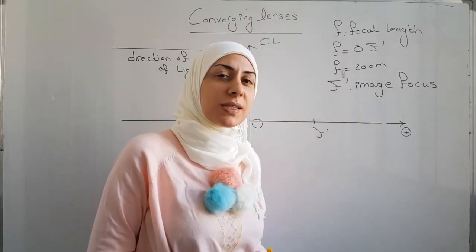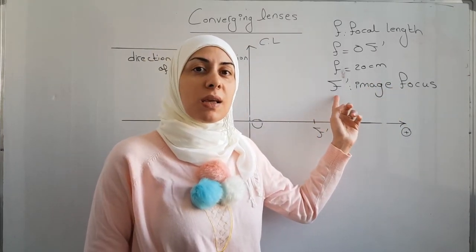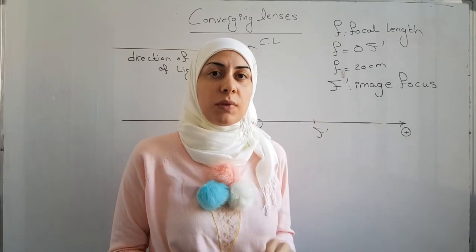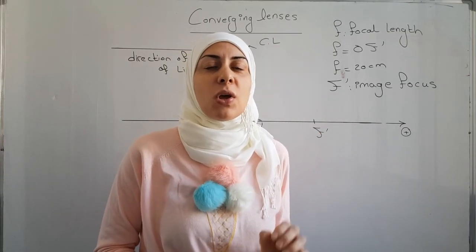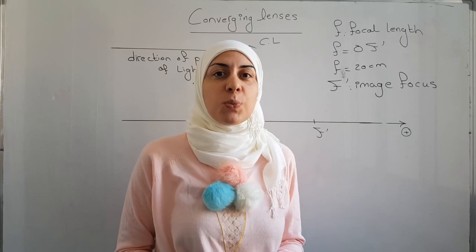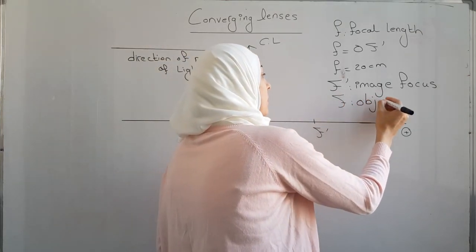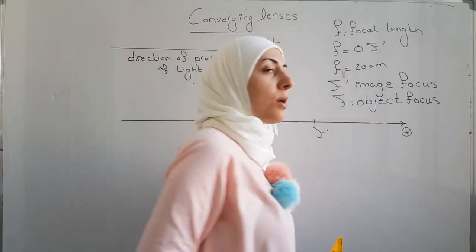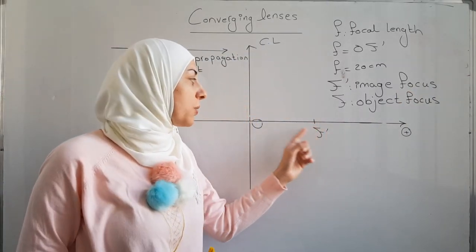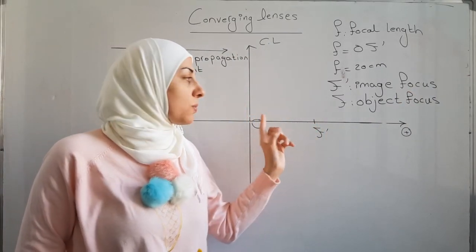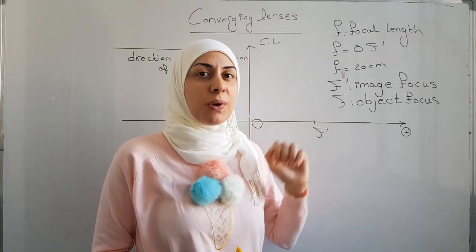The image focus is denoted by an uppercase letter F. We still have one important point on the optical axis which is point F called the object focus, where F is the symmetric of f prime with respect to O. So once you know f prime, you can know F.